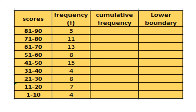This is how you fill up the frequency distribution table. The first step is you add up all the frequencies — all the numbers in the frequency column. You will get 75. Then that 75, you place it across the highest score, which is 81 to 90, under the cumulative frequency column.